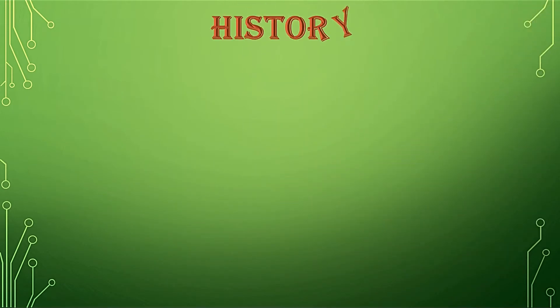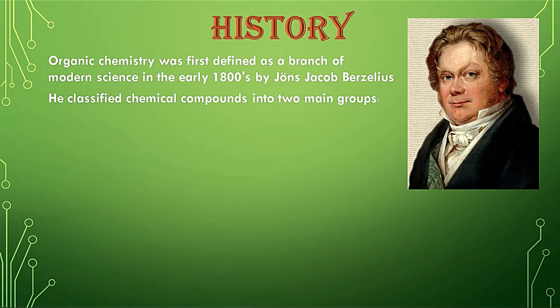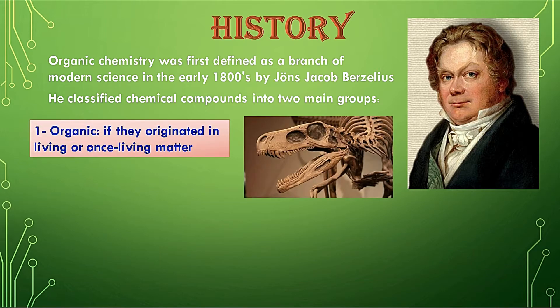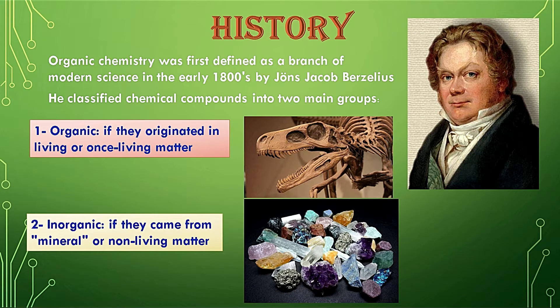The study of these hydrocarbons and their derivatives is known as organic chemistry. Derivatives are the compounds made from hydrocarbons. Now I'll tell you some history of organic chemistry. This branch of chemistry was first defined as a branch of modern science in the early 1800s by Jöns Jacob Berzelius. He classified chemical compounds into two main groups: organic compounds, obtained from dead animals and plants, and inorganic compounds, obtained mainly from minerals or non-living matter.